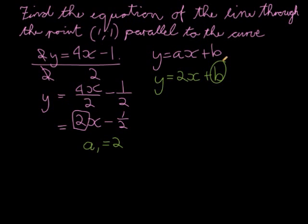So I do that by substituting any point on the curve, and they gave me a point. They said it passes through the point (1,1). So y is 1 when x equals 1 as well. So I replace y with 1 and I replace x with 1.